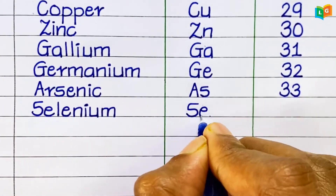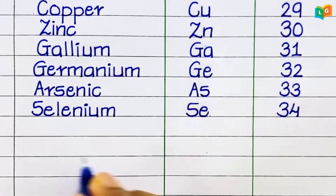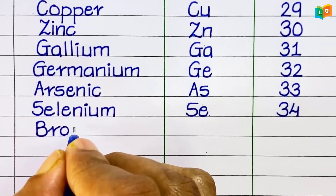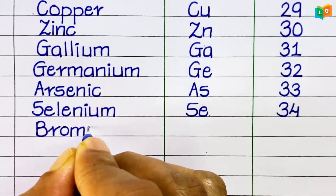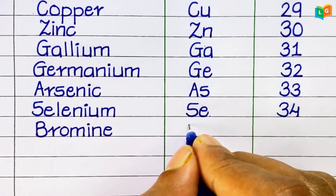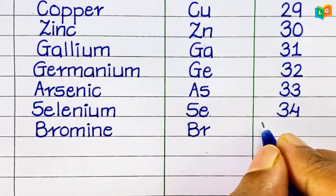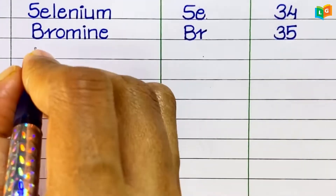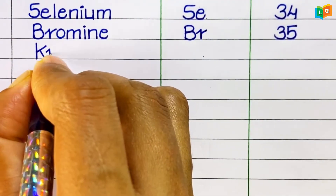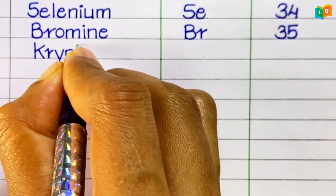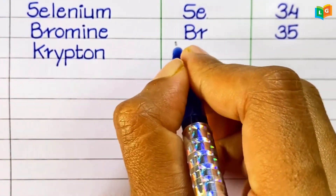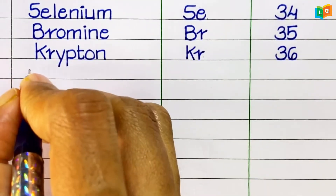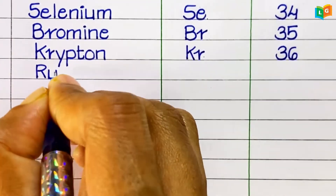Selenium, symbol Se, atomic number 34. Bromine, symbol Br, atomic number 35. Krypton, symbol Kr, atomic number 36.